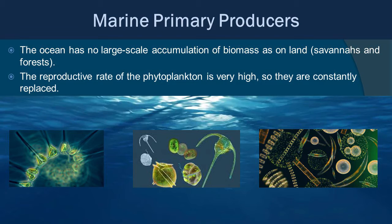The ocean itself has no large-scale accumulation of biomass as you would on land — you're not going to see a vast forest with trunks and leaves. It's mostly based on that really tiny stuff, the phytoplankton. The thing is, phytoplankton has a really high reproductive rate, so it's being replaced constantly. That sort of replaces having so much large biomass as you do in terrestrial habitats, but it keeps the system going in the ocean.